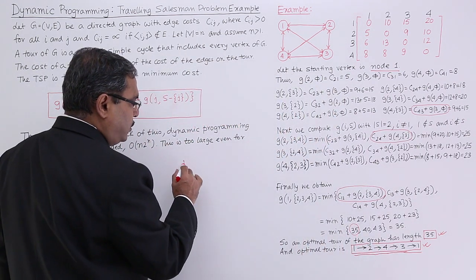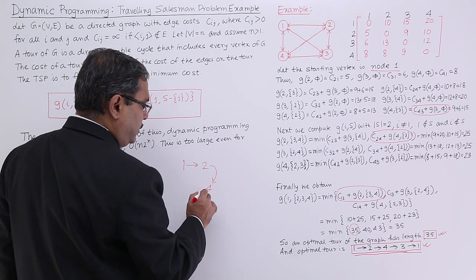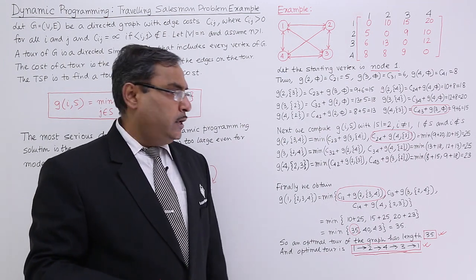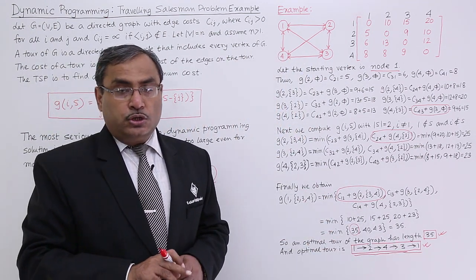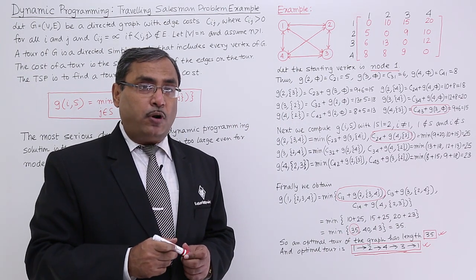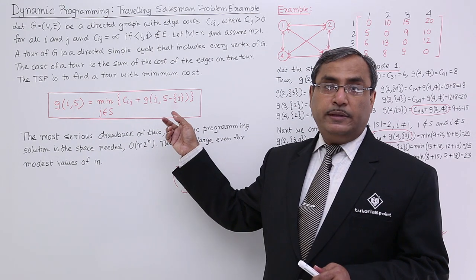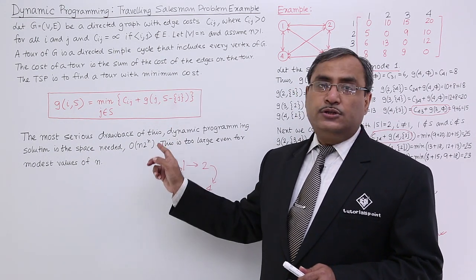The path thus obtained is 1, then 2, then I shall go for 4, then I shall go for 3, then I shall go for 1. So that is the path. Cost I got, path I got, I solved the problem. In this way, the travelling salesman problem can be solved and see the function. The function is having the recursive call also. In this way, we can easily solve this problem.